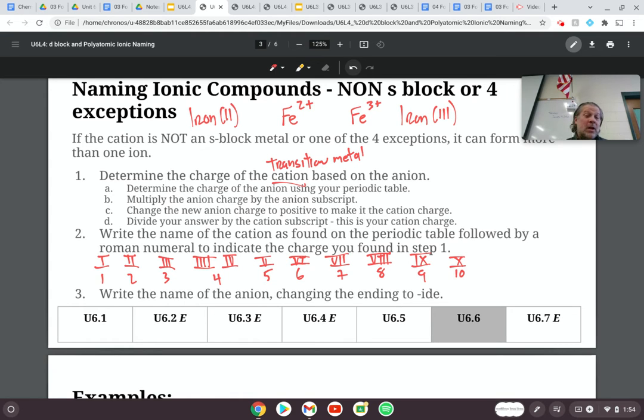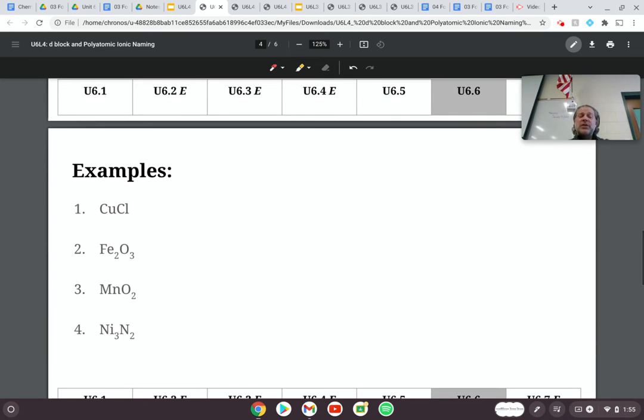Everything else is the same. This stuff in the middle, I'm going to kind of go through. Basically, we figure out the charge of the anion using our periodic table. We multiply the anion by the anion subscript. We change it to positive, then we divide. We'll go through it. It'll be great. So here we go. I'm going to actually skip the first one and come back to it. I'm going to go with Fe2O3 first.